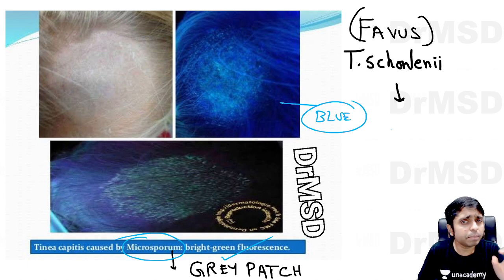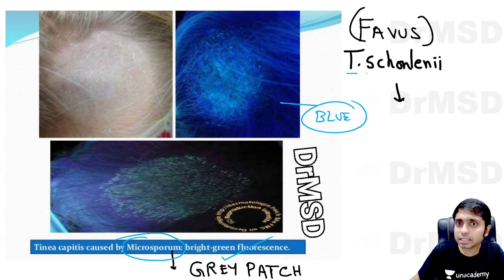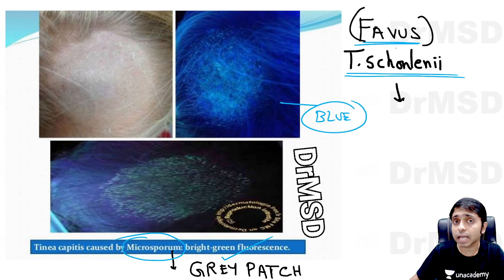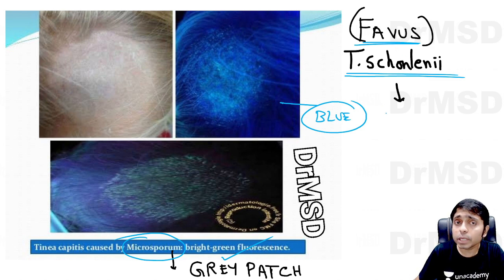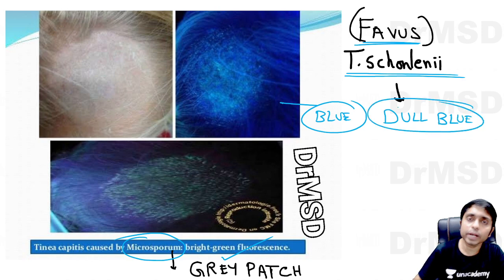Please remember that not only Microsporum but also other Wood's lamp-positive organisms in Tinea capitis exist. Trichophyton schoenleinii, which causes favus — a scarring alopecia — will show a dull blue fluorescence under Wood's lamp examination.